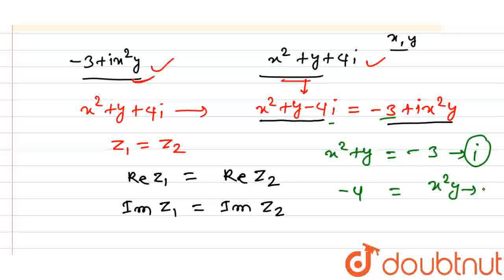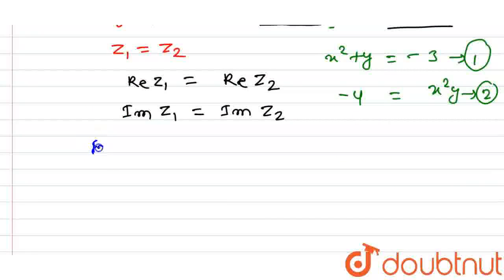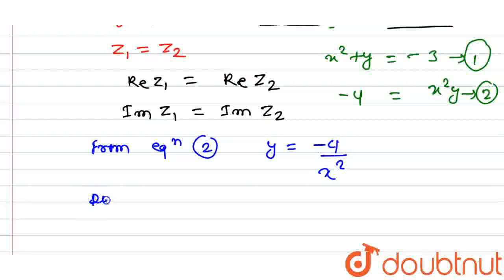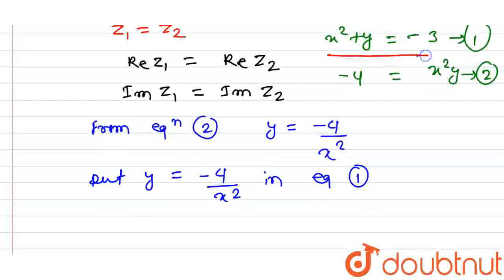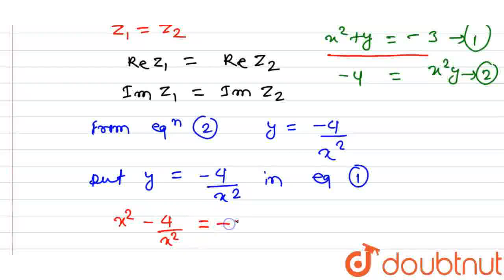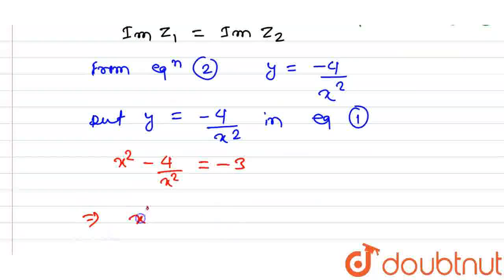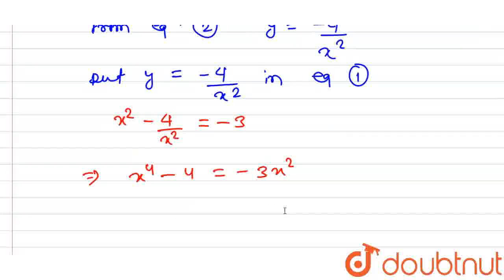From equation 2, we get y equals minus 4 divided by x squared. Substituting this into equation 1, we get x squared minus 4 divided by x squared equals minus 3. Solving this gives x to the power 4 minus 4 equals minus 3 times x squared, which rearranges to x to the power 4 plus 3 times x squared minus 4 equals 0.